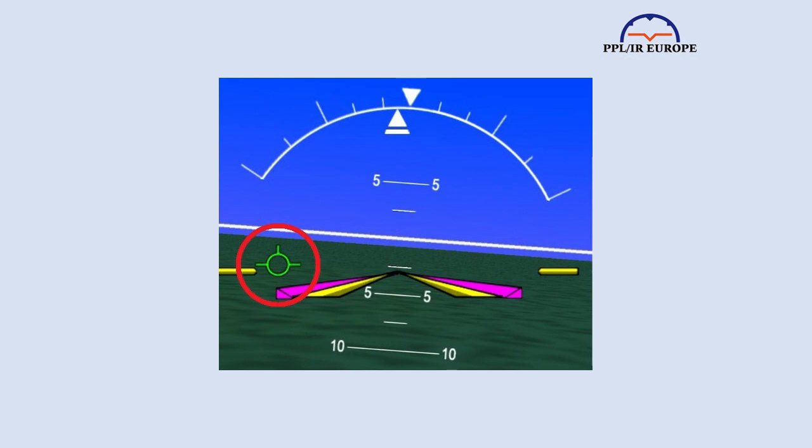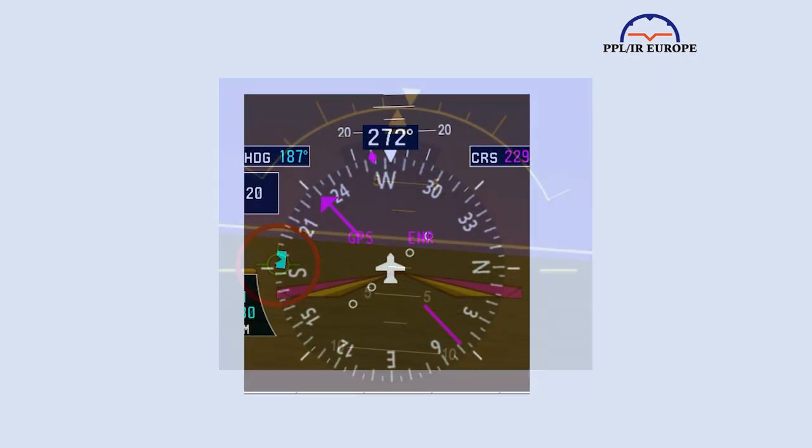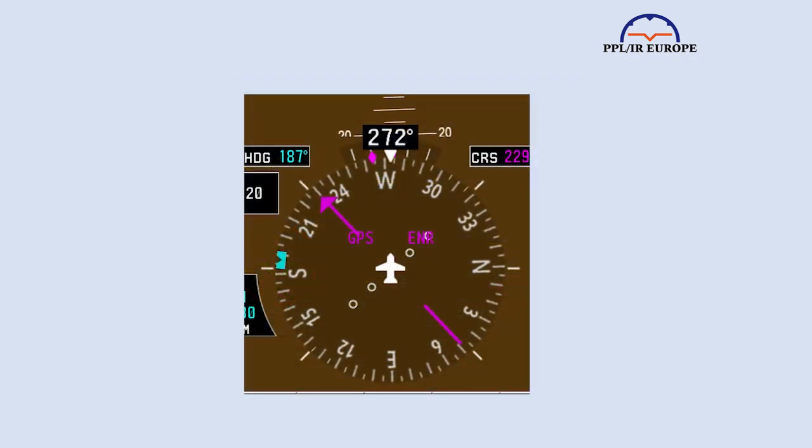The flight path marker, sometimes called the flight path vector, is only present with synthetic vision, but is then extremely useful as you can put the aircraft on the desired trajectory horizontally and vertically. So let's start with the track pointer.